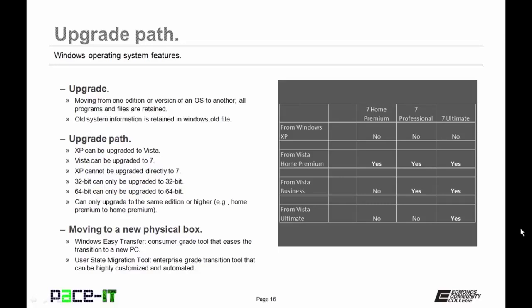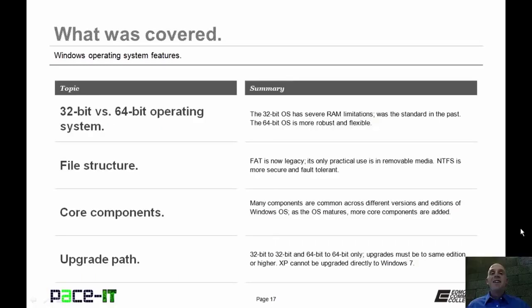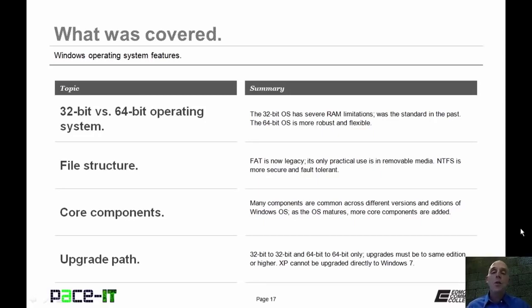For the enterprise, Microsoft introduced the User State Migration Tool — a great tool that can highly automate the transition from one physical machine to another. That concludes this session. We covered 32-bit versus 64-bit operating systems, file structure, some core components of Windows operating systems, and the upgrade path.